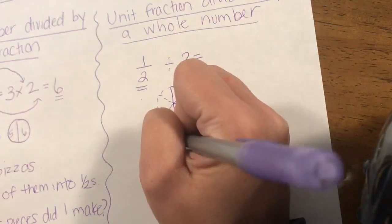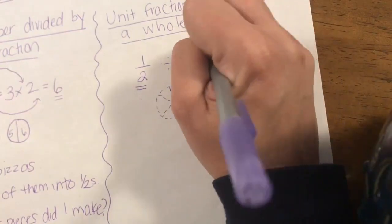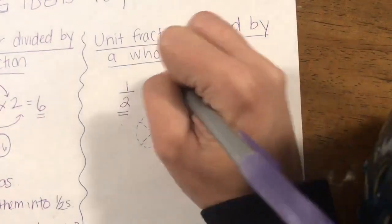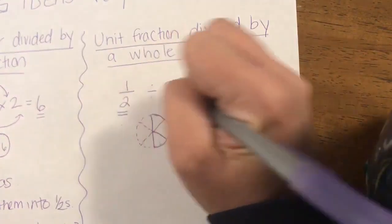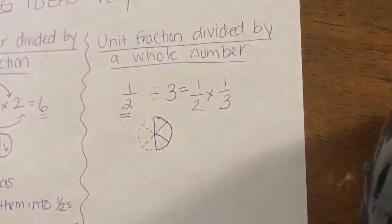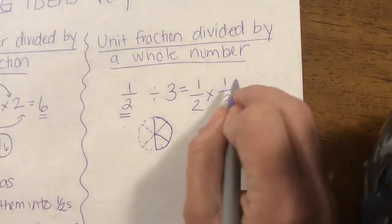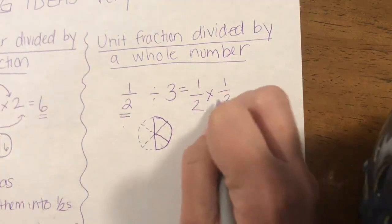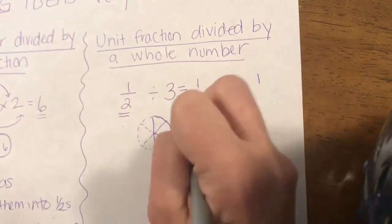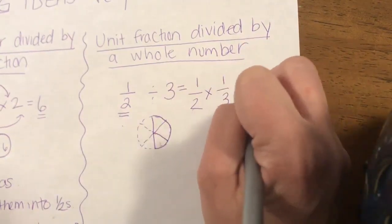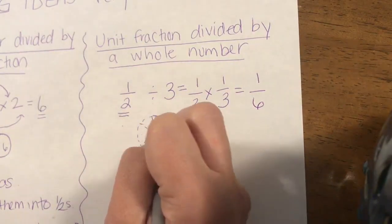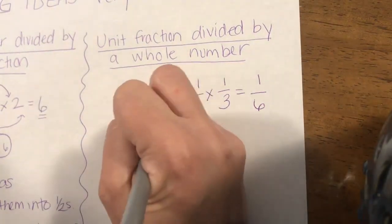When I change this to multiplication, my one half stays the same because I still only have a half of a pizza. But when three people share it, they get one third of it — going back to last chapter, part of a part. My one third of one half: numerator times numerator is one, denominator times denominator is six. And you can see in our picture I made one, two, three, four, five, six pieces, and each of these is one sixth.